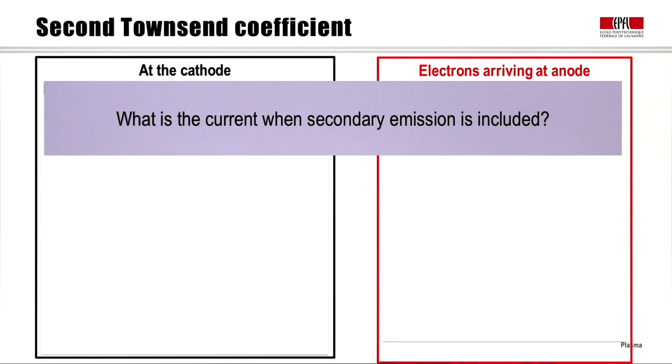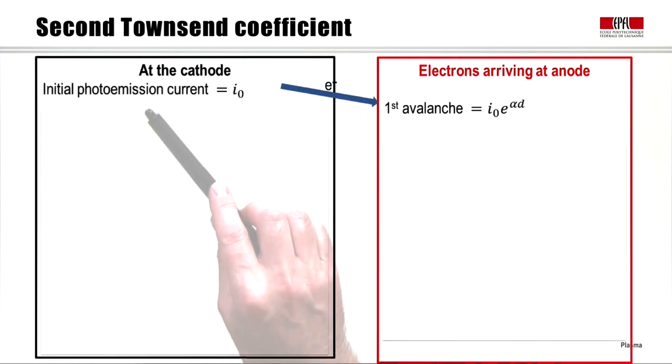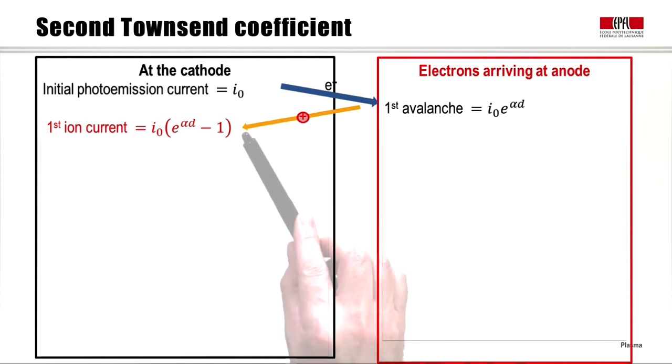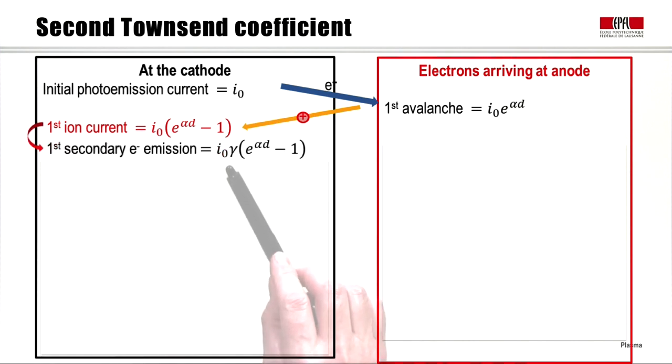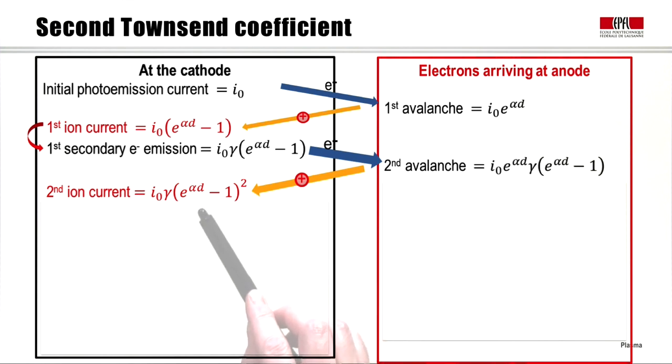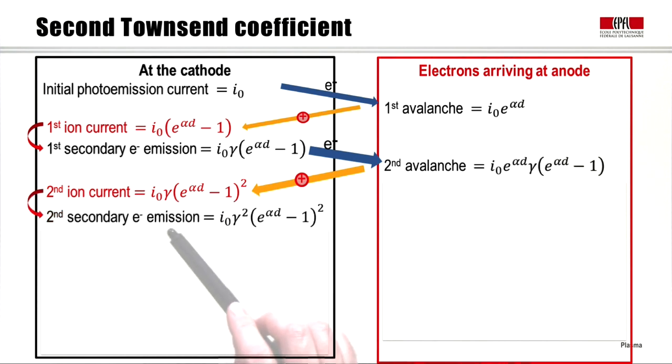So the question is, what is the current when secondary emission is included? The initial photoemission current from the cathode undergoes avalanche as it arrives at the anode. All the ions created during the avalanche drift back to the cathode, and the fraction gamma of these ions creates secondary electrons, which themselves avalanche towards the anode, giving this number of electrons arriving at the anode, giving rise also to this number of ions arriving back at the cathode, whose fraction gamma gives another secondary emission source, which travels with avalanche to the anode, etc.